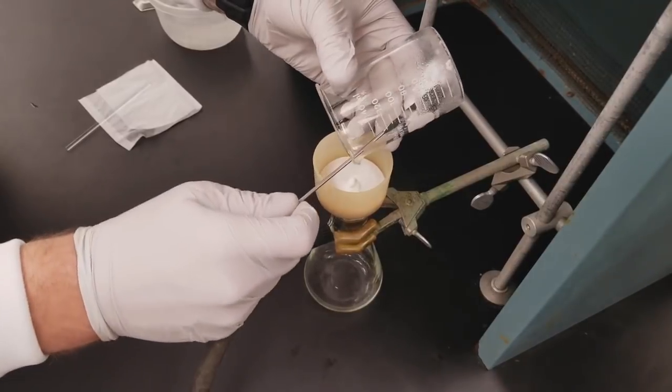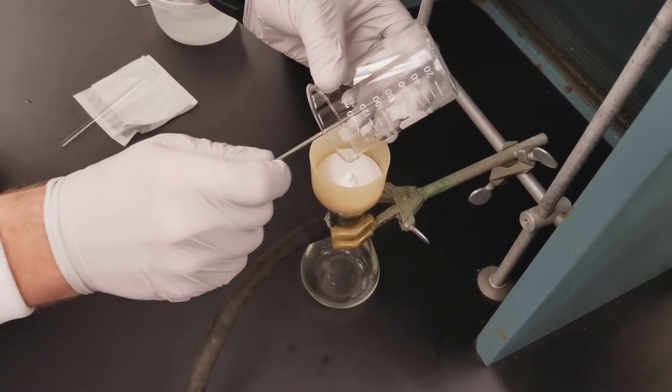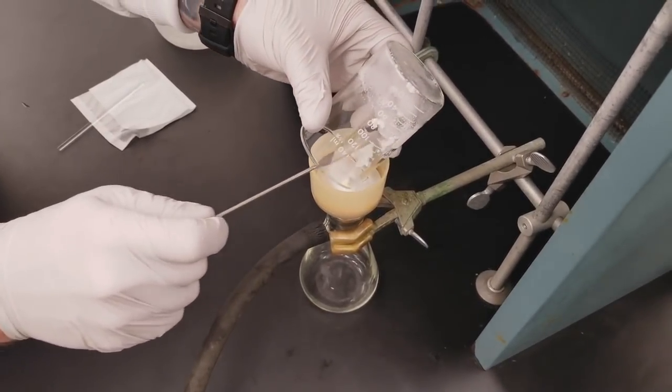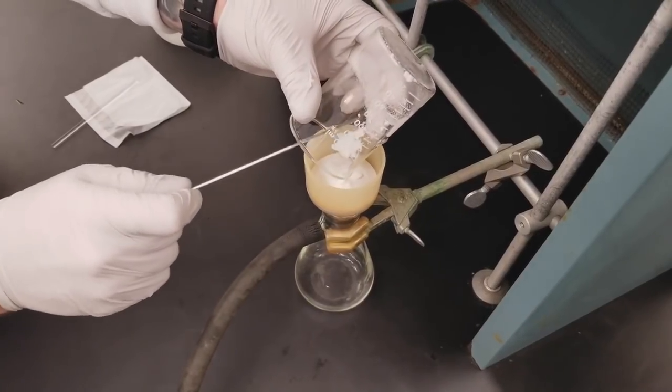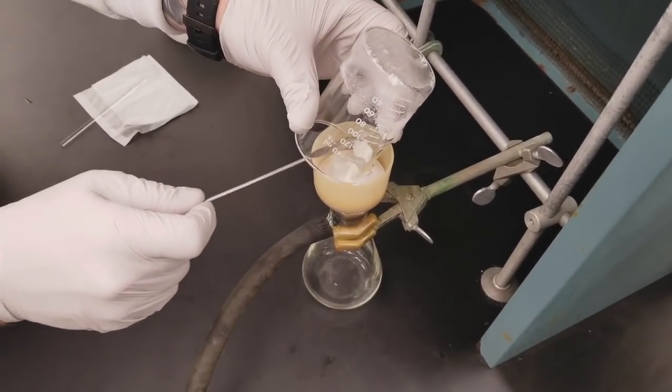You can use a spatula to help aid in transferring the solid over. Just again put that into the center of the Buchner funnel.